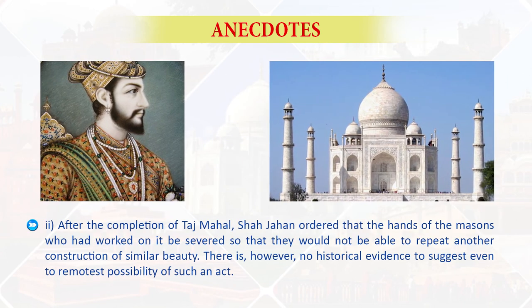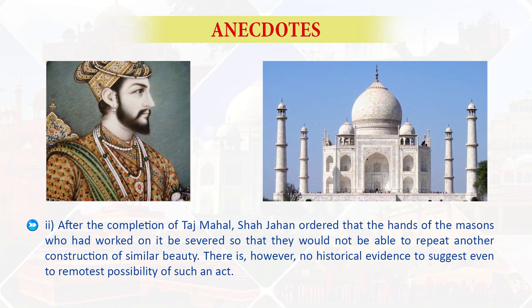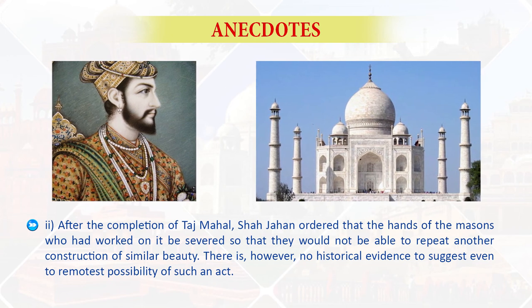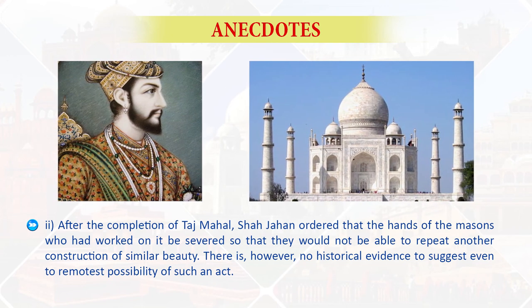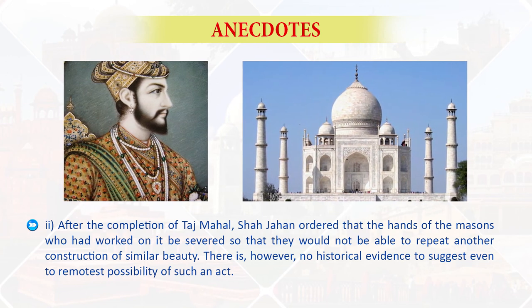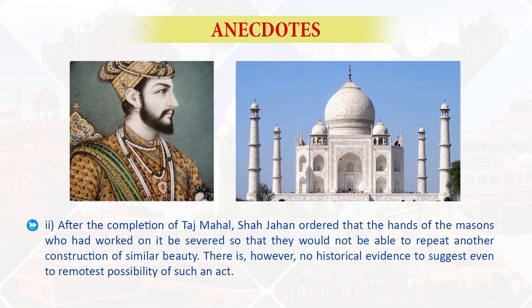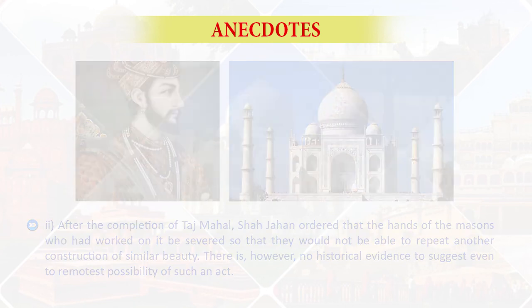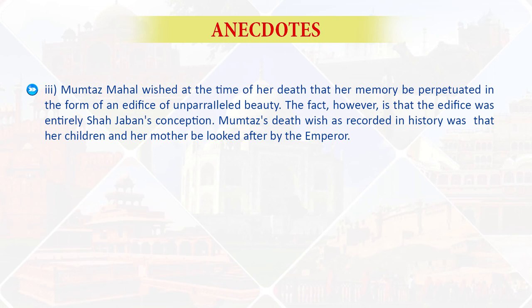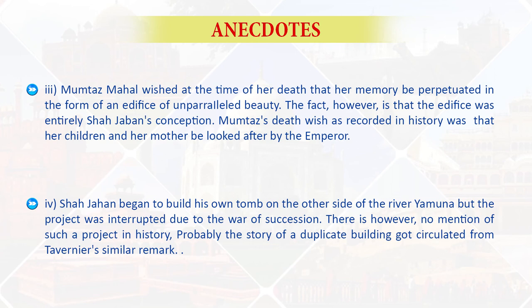The second myth is that after the completion of Taj Mahal, Shah Jahan ordered that the hands of all the masons who had worked on it be severed so that they would not be able to repeat another construction of similar beauty. There is, however, no historical evidence of such an act and any suggestion of it is nowhere written. Even the remotest possibility of such an act does not seem possible. The third myth is that Mumtaz Mahal wished at the time of her death that her memory be perpetuated in the form of an edifice of unparalleled beauty. The fact, however, is that the edifice was entirely Shah Jahan's conception. Mumtaz's dying wish as recorded in history was that her child and her mother be looked after by the emperor.